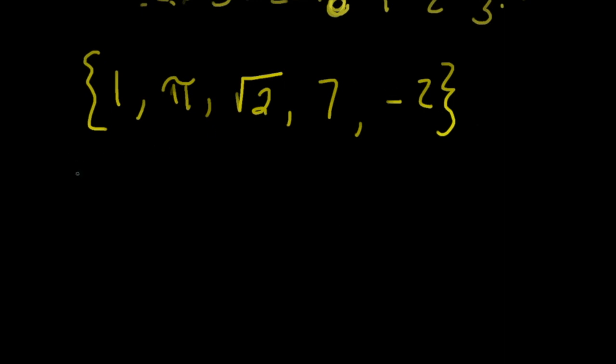Then we've got special sets of numbers. So I want to introduce this notation now. This double scripted N stands for the natural numbers and these will be the numbers starting at 1, 2, 3, 4, and so on and so forth. So these are our counting numbers.